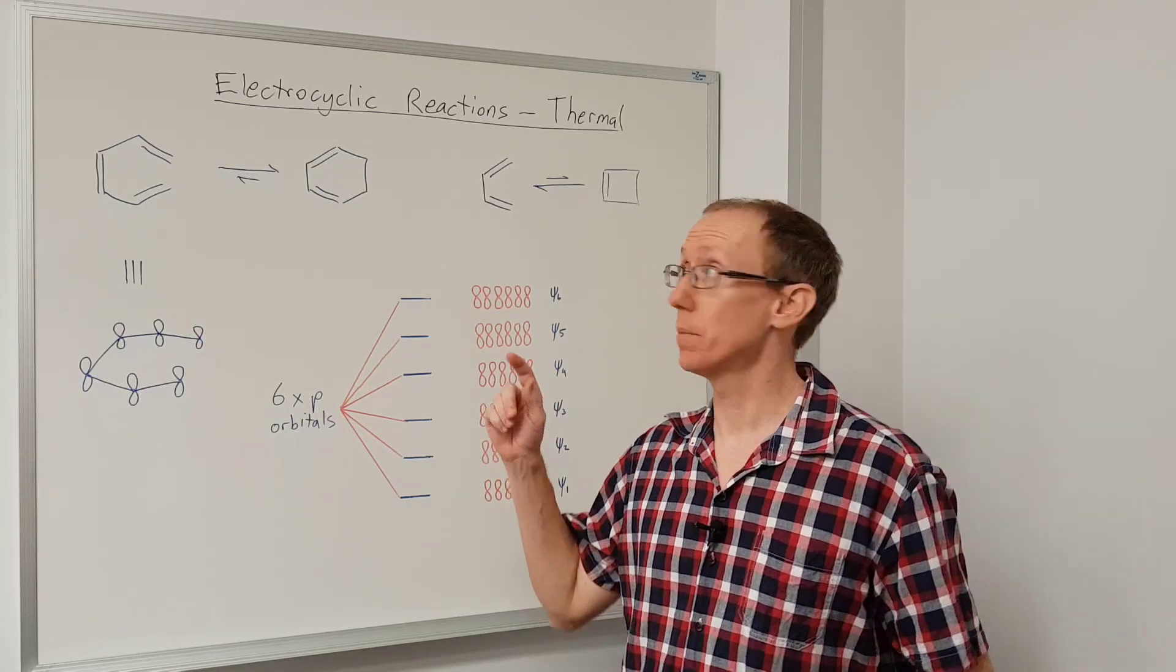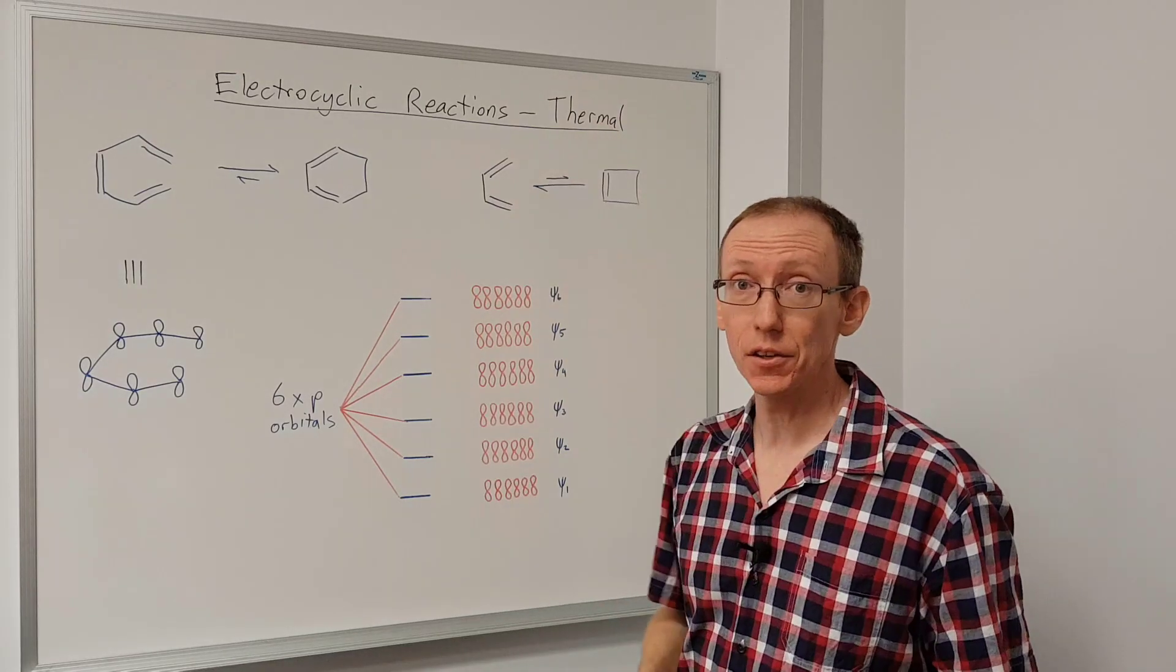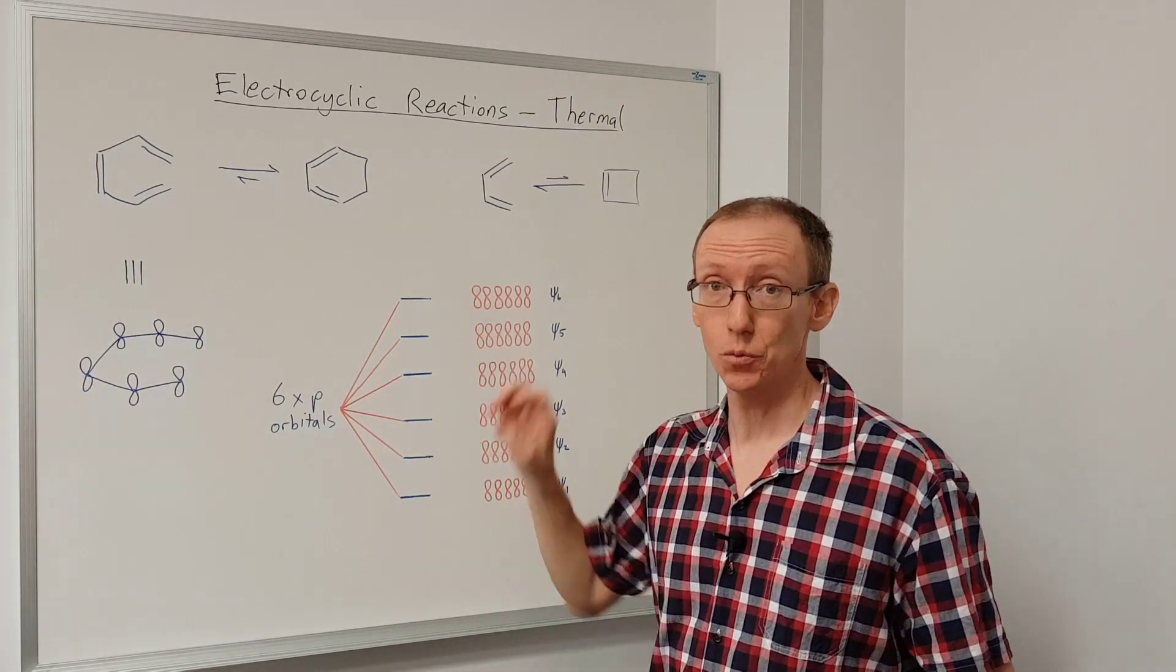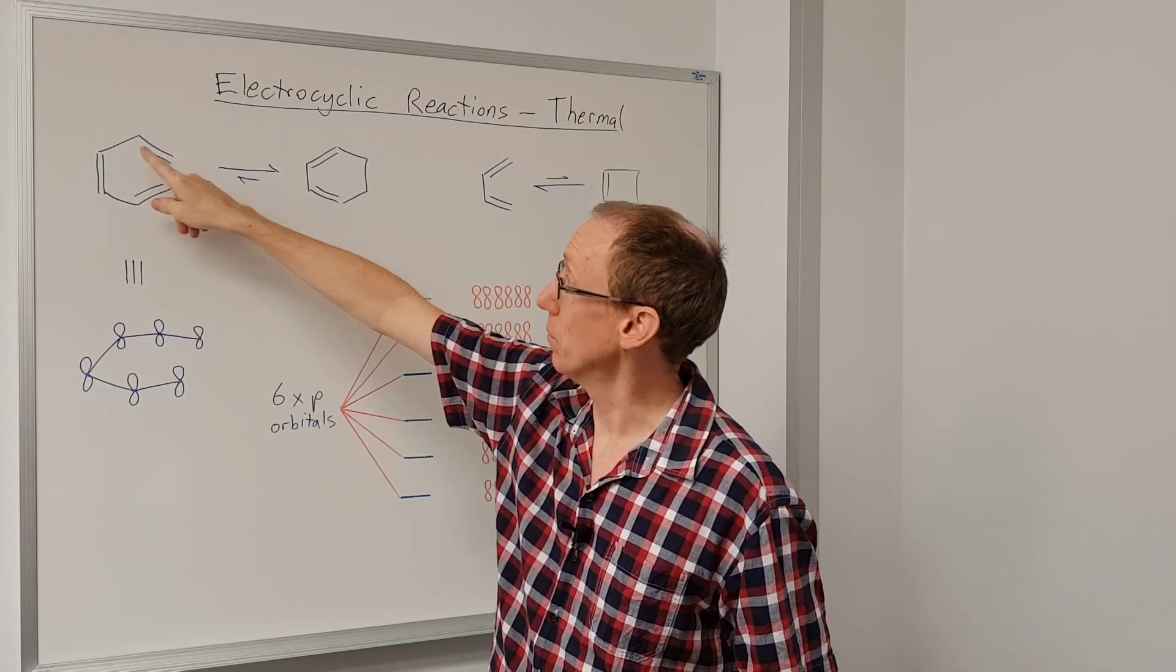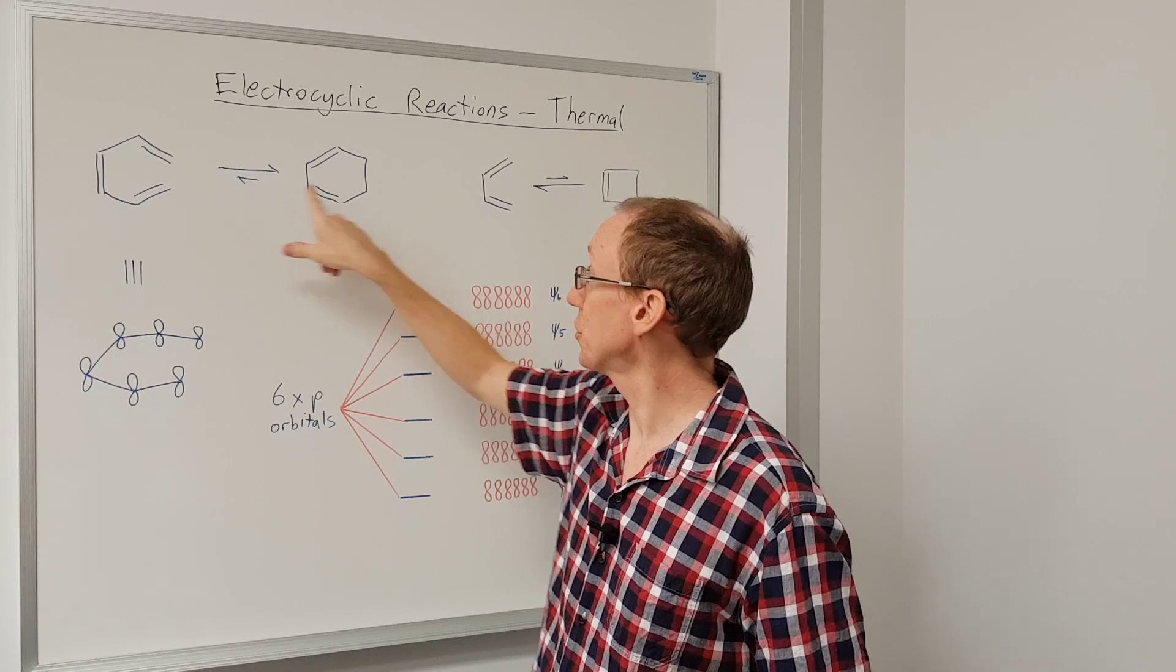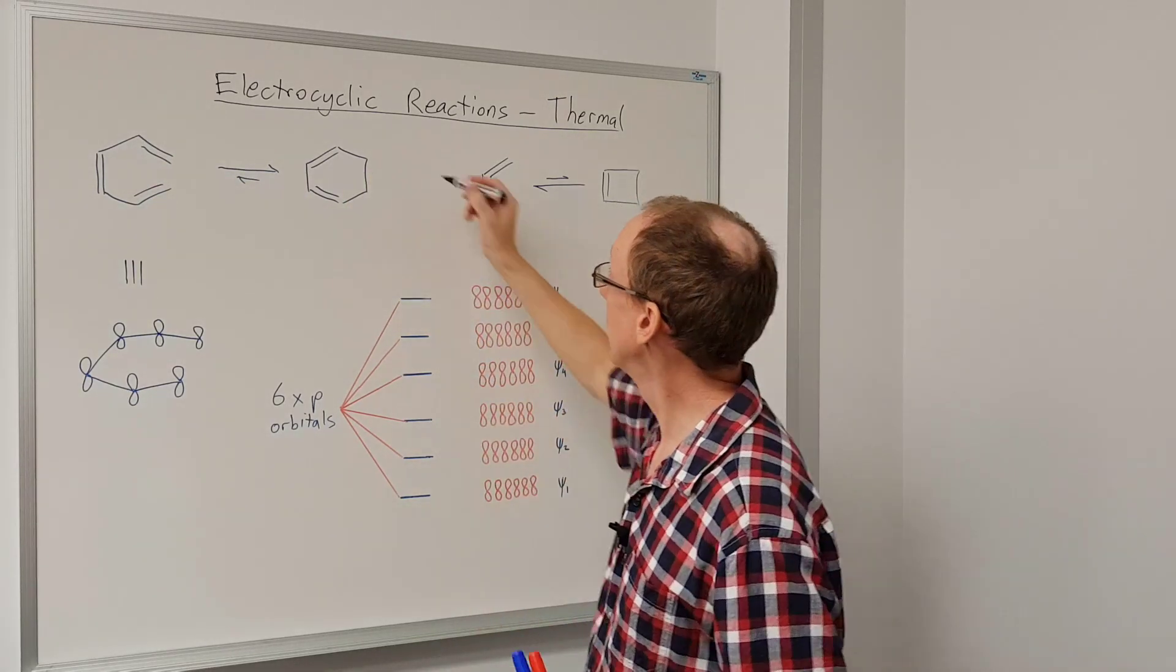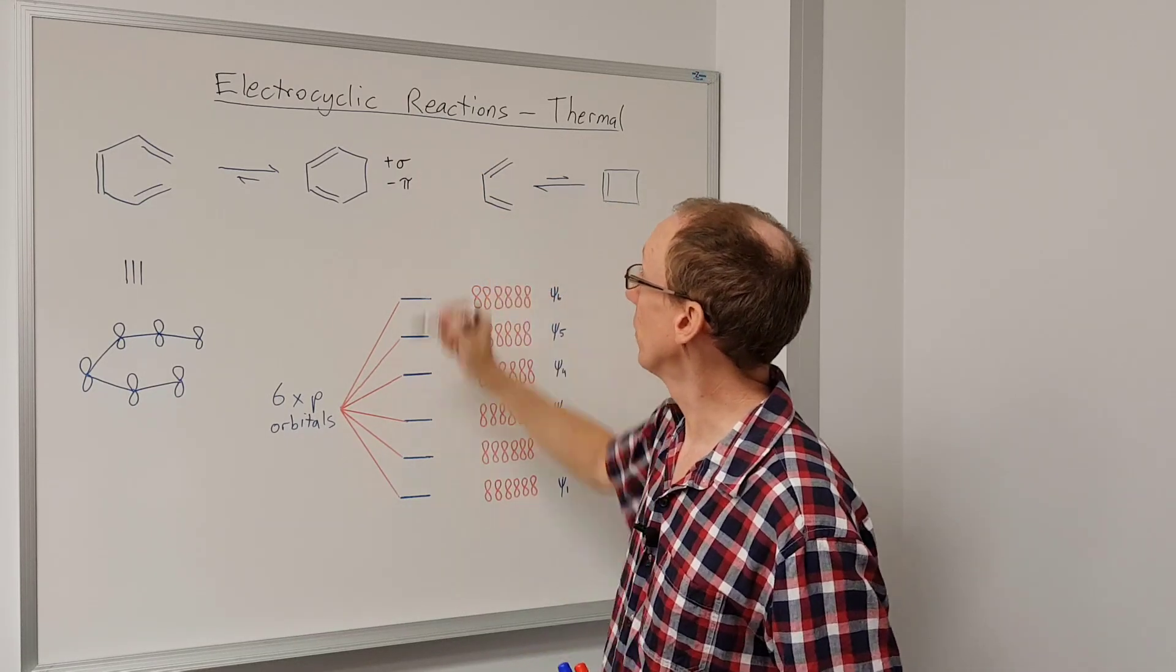This video is about electrocyclic reactions, particularly under thermal conditions, so this is with heating. Electrocyclic reactions take pi systems like this and they undergo electrocyclization where we form one new sigma bond and we lose one pi bond.